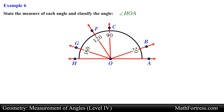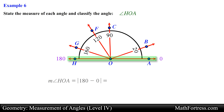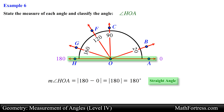Angle GOA. Ray OH is aligned with the 180 degree mark and ray OA is aligned with the 0 degree mark. Computing the absolute difference of these angles, we obtain 180 degrees. So this angle can be classified as a straight angle.